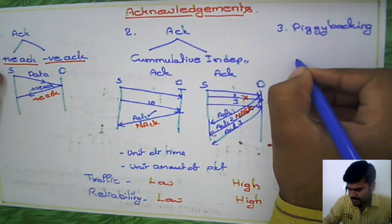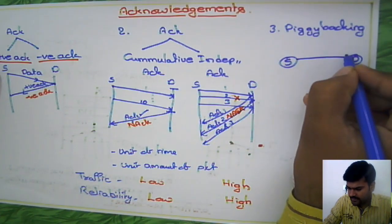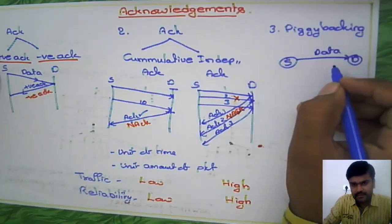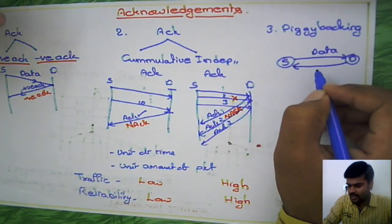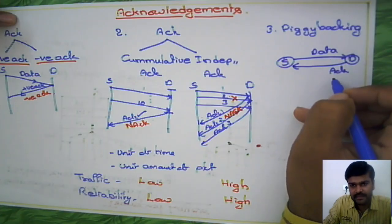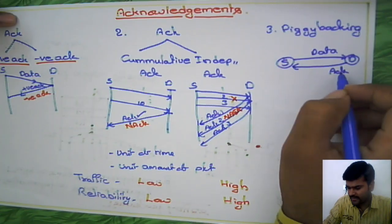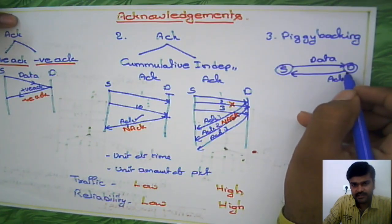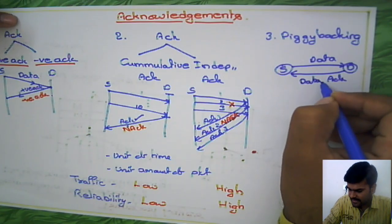Next one is piggybacking. In the case of piggybacking, you have the source and the destination and you transfer some data. In the normal case, the destination has to give an acknowledgement for the corresponding packet. But in this case, assume that the destination also has some data to transfer to the source.